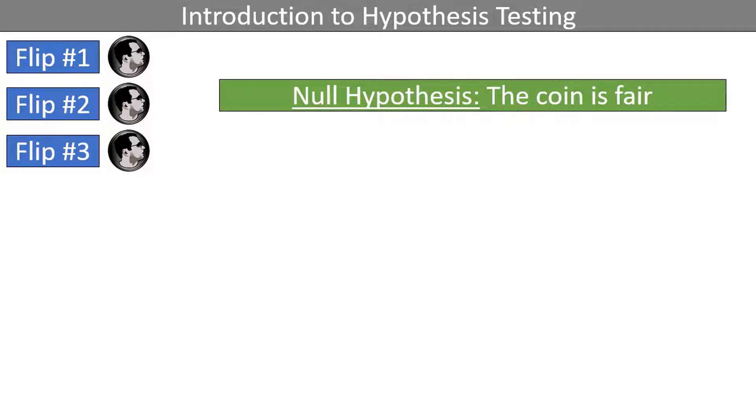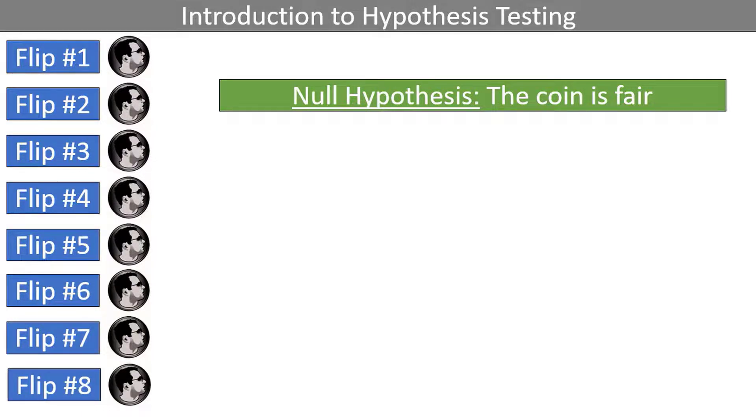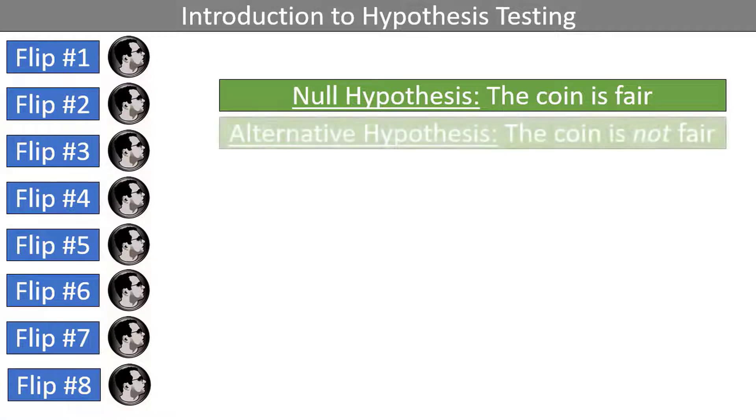Let's say that I keep flipping the coin. Flip 4, heads. 5, heads. 6, 7, 8. Heads, heads, heads. Alright, something's going on here. Either I have witnessed a very rare and improbable event, flipping 8 heads in a row on a fair coin, or maybe my null hypothesis is incorrect. Maybe we should adopt a new hypothesis, an alternative hypothesis, that the coin is not fair.